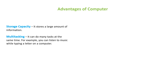A computer can play music for you while you start drawing, or you can play games and also give a printout at the same time. That is called multitasking — when you do more than one task at the same time. For example, you can listen to music while typing a letter on a computer.